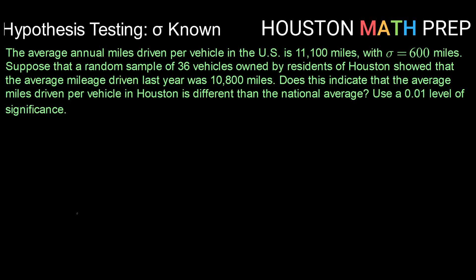So let's see if Houston drivers drive less, or different anyway, than the national average. So we'll start with writing our null hypothesis. That is always a statement of equality. So in this case, mu will be equal to what we believe about this population, which is 11,100 miles is the average.